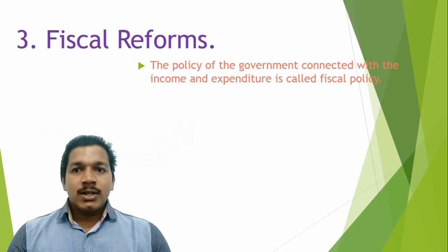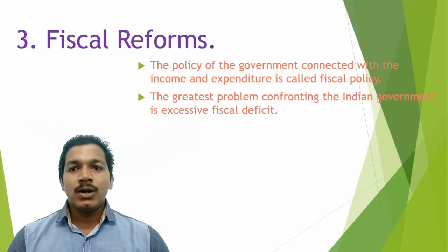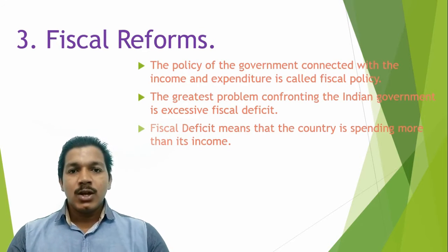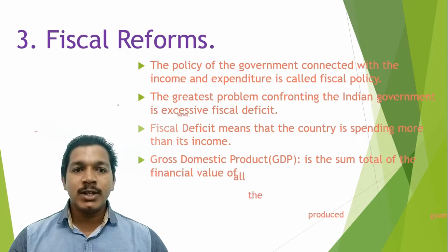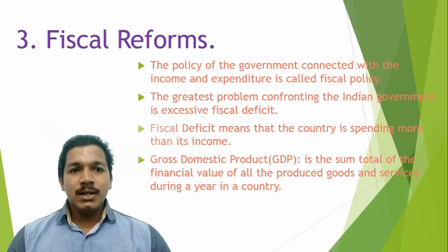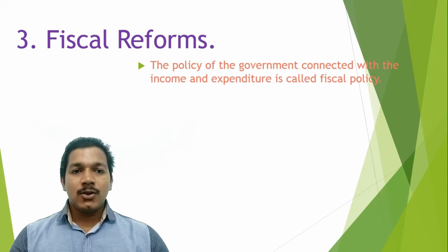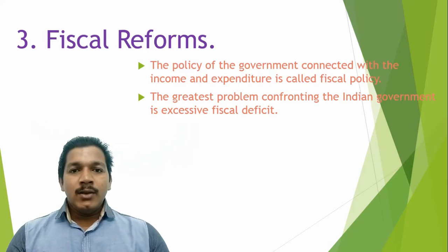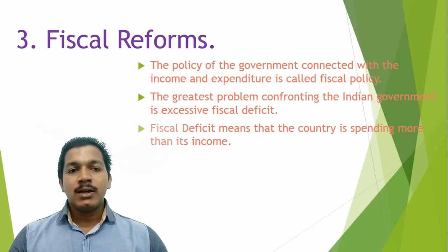The Gross Domestic Product, or GDP, is the sum total of the financial value of all goods and services produced within a country during a year. Most policies and decisions are made based on the GDP — how much is our GDP and what percentage is to be spent on different purposes. In 1991, the fiscal deficit was 3.5% of GDP, meaning 3.5% more than the income was spent.